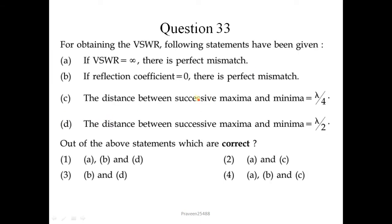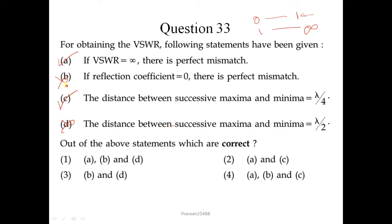Question number 33: for obtaining the VSWR, the following statements are given. If VSWR is infinity, there is a perfect mismatch — this is correct. If reflection coefficient is 0, there is a perfect mismatch — this is not correct; for perfect mismatch the reflection coefficient should be 1, and correspondingly VSWR varies from 1 to infinity. The distance between successive maxima and minima is lambda by 4 — this is also correct. So A and C are correct; the second option is correct.